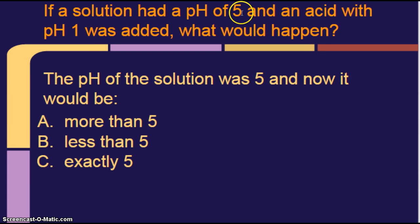Alright, so I have something that's a little bit acid, and I'm adding a really strong acid to it. What would happen? The pH of the solution was 5, and now it would be more than 5, less than 5, or exactly 5. And the answer would be less than 5, right?